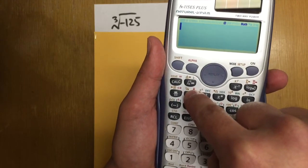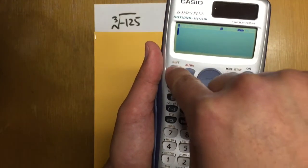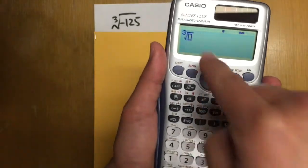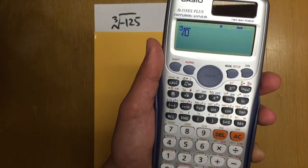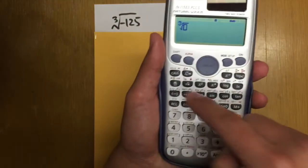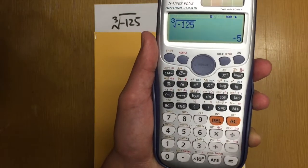And this is in orange-ish color. So to hit that, you have to first hit shift and then this key. And then you see the cube root symbol pops out. And then we just have to enter negative 125.